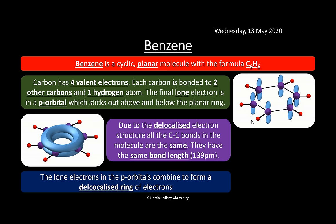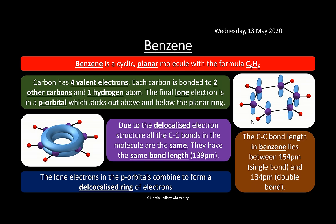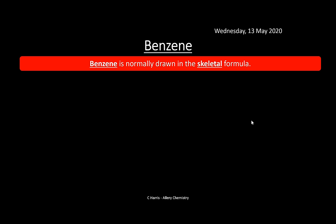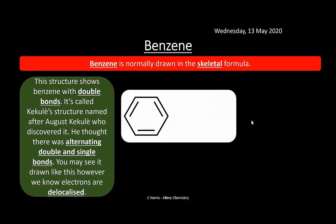The carbon–carbon bond length in benzene lies between 154 pm (single bond) and 134 pm (double bond), suggesting it isn't straightforward in terms of single and double bonds. Benzene is normally drawn in a skeletal formula, making it easier to draw rather than showing all carbons, hydrogens and bonds in the hexagon. The structure showing alternating double bonds is called the Kekulé structure, named after scientist August Kekulé.